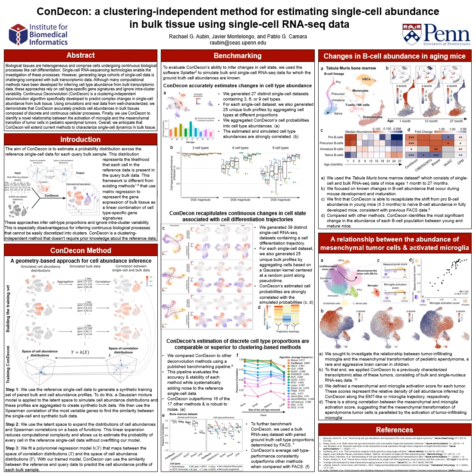To evaluate CondiCon's ability to infer changes in cell state, we used the software Splatter to simulate bulk and single cell RNA-seq data for which the ground truth cell abundances are known. We begin with cell type simulations where we generate 27 different single cell data sets containing 3, 6, or 9 cell types. For each single cell data set, we also generated 25 unique bulk gene expression profiles by aggregating cells at varying proportions. We then used CondiCon to infer the distribution of cell abundances in each bulk data set using the single cell data as reference. We find that the estimated and simulated cell type abundances are strongly correlated, demonstrating the utility of our clustering independent approach for gene expression deconvolution.